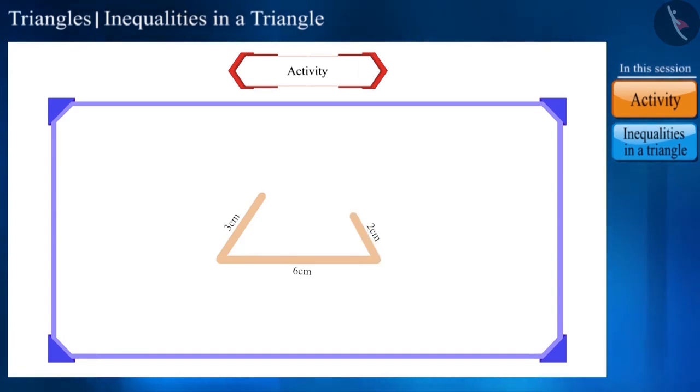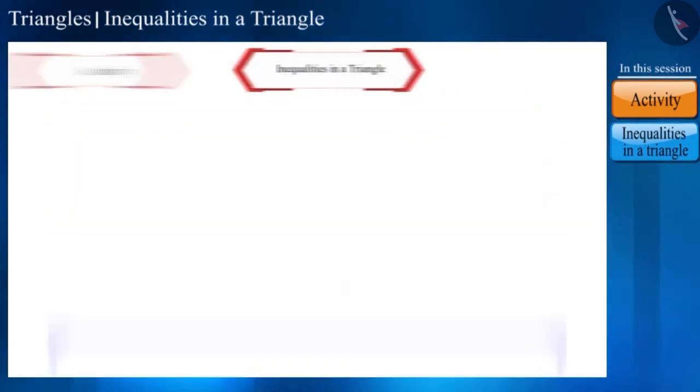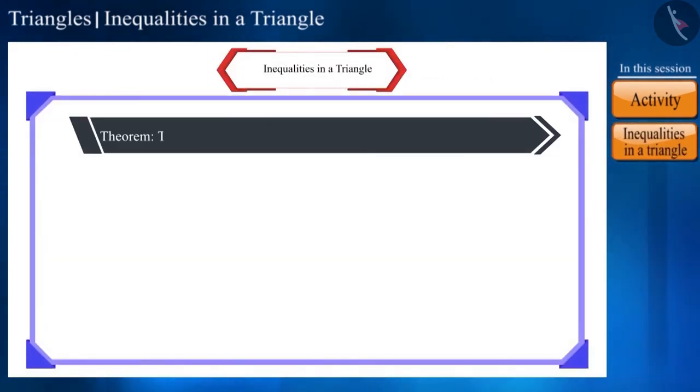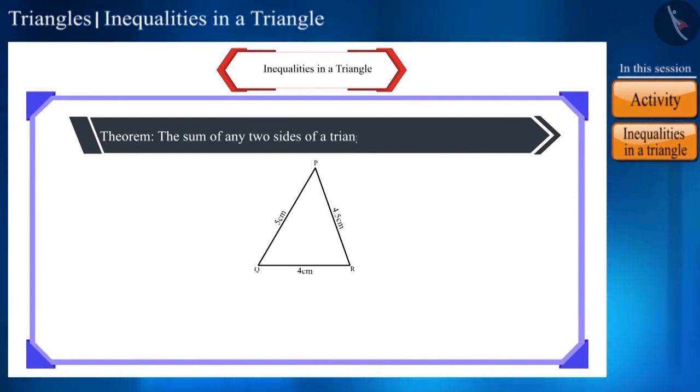The construction of a triangle is possible only if the sum of the lengths of any two sides of a triangle is greater than the length of the third side. And this is the theorem which says that the sum of any two sides of a triangle is greater than the third side.